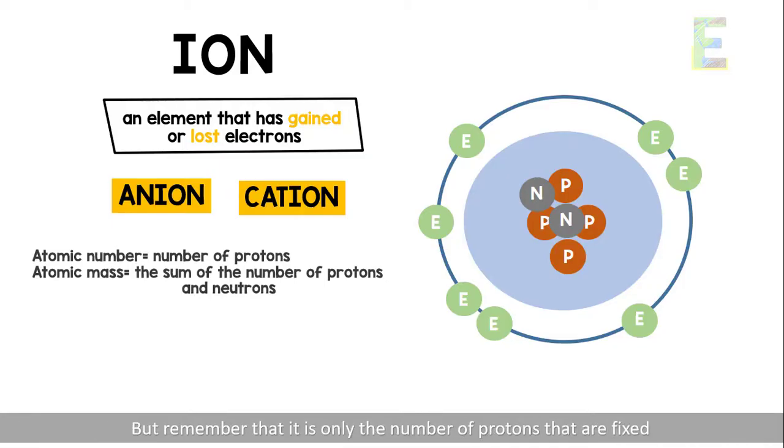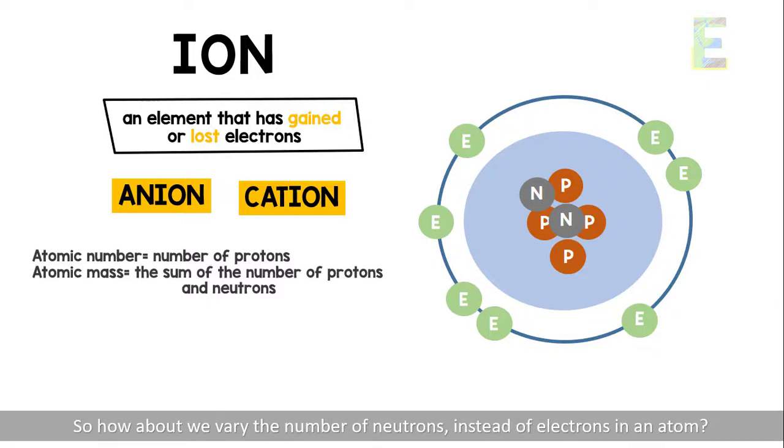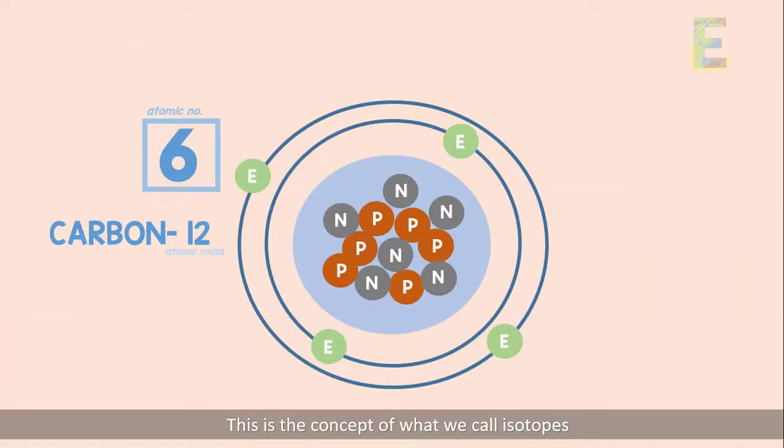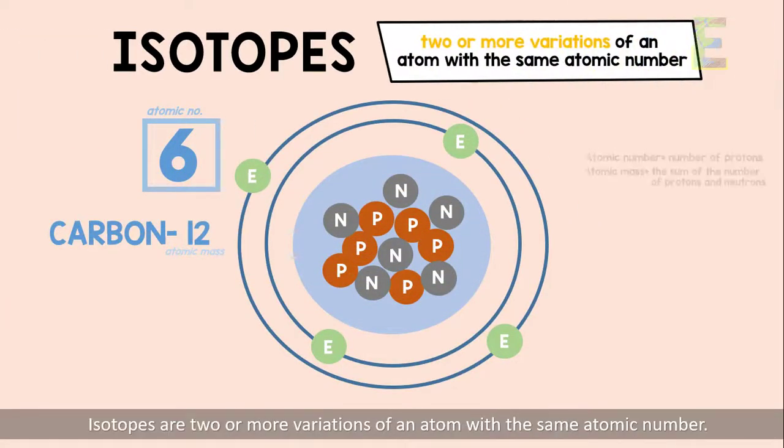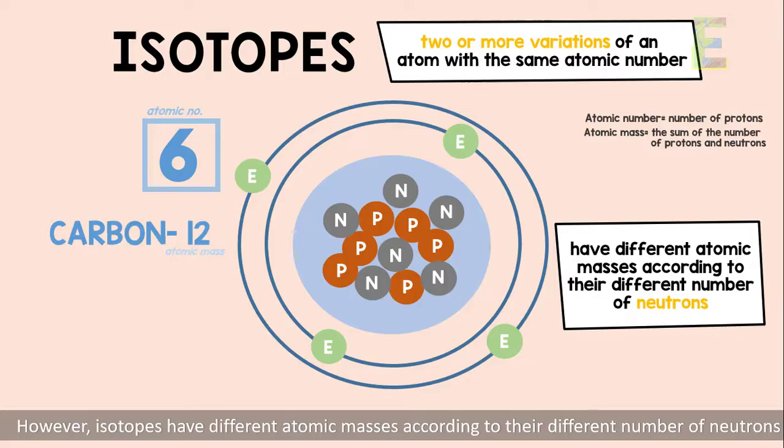But remember that it is only the number of protons that are fixed, so how about we vary the number of neutrons instead of electrons in an atom? This is the concept of what we call isotopes. Isotopes are two or more variations of an atom with the same atomic number. However, isotopes have different atomic masses according to their different number of neutrons.